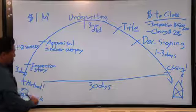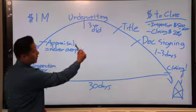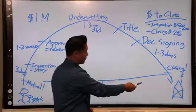Now, you've gone for mutual, inspection, appraisal, underwriting, title, doc signing, and closing.